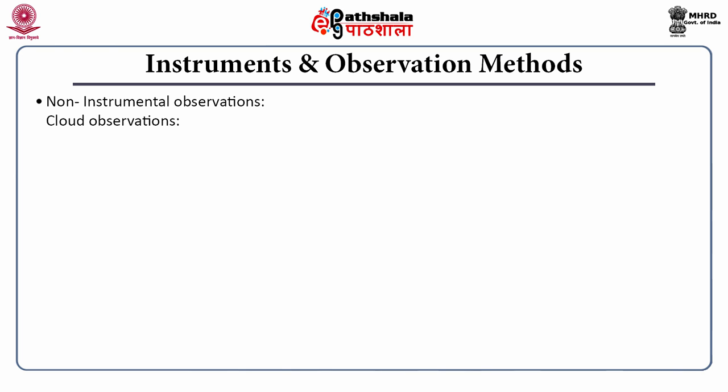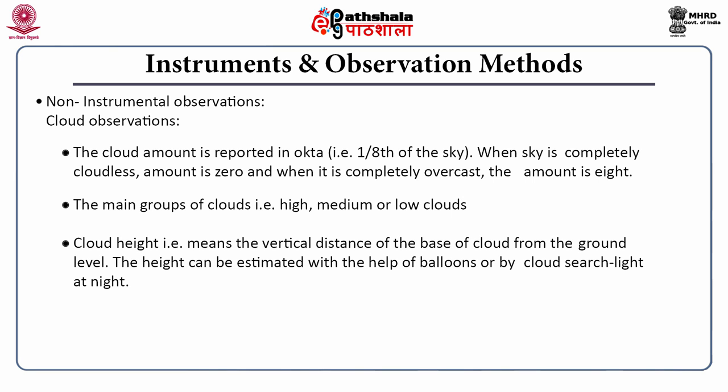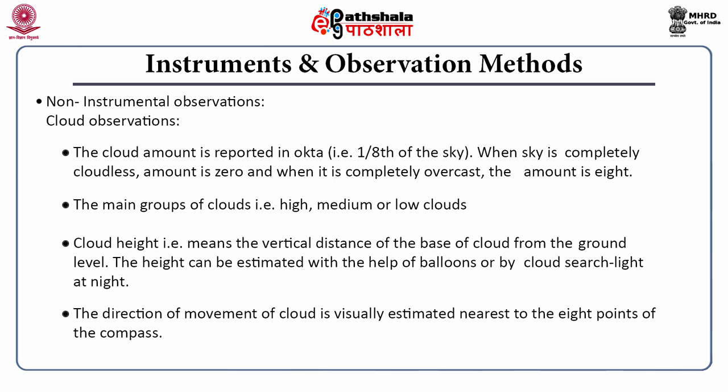Next are the non-instrumental observations — parameters that can be measured without the aid of instruments. One of them is cloud. The cloud amount is reported in terms of oktas: if the sky is completely cloudless it is 0 oktas, and if completely overcast it is 8 oktas. The main groups of clouds — high, medium, and low — can also be identified. Cloud height, that is the height of the base of the cloud from the ground, can be estimated with the help of balloons or during night time by searchlight. The direction of movement of cloud can be visually estimated to the nearest 8 points of the compass.